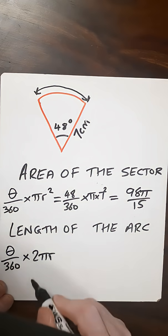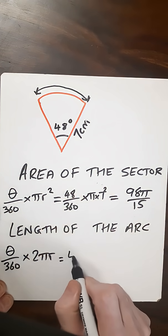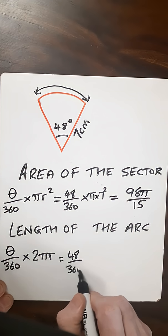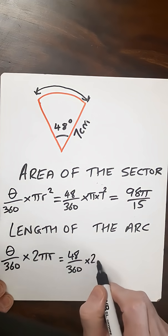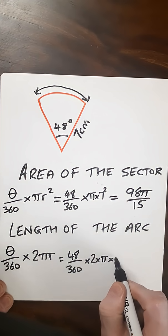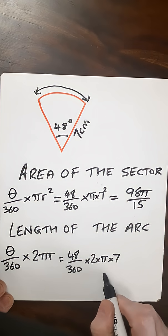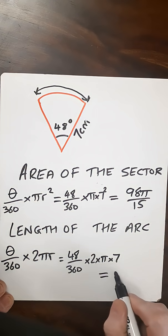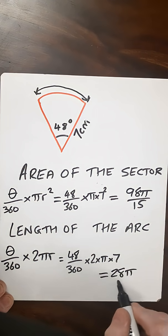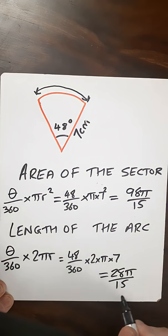Put those values into our equation here. We've got 48 over 360 yet again, multiply that by 2 times pi times 7. Then all that will come out to 28 pi over 15.